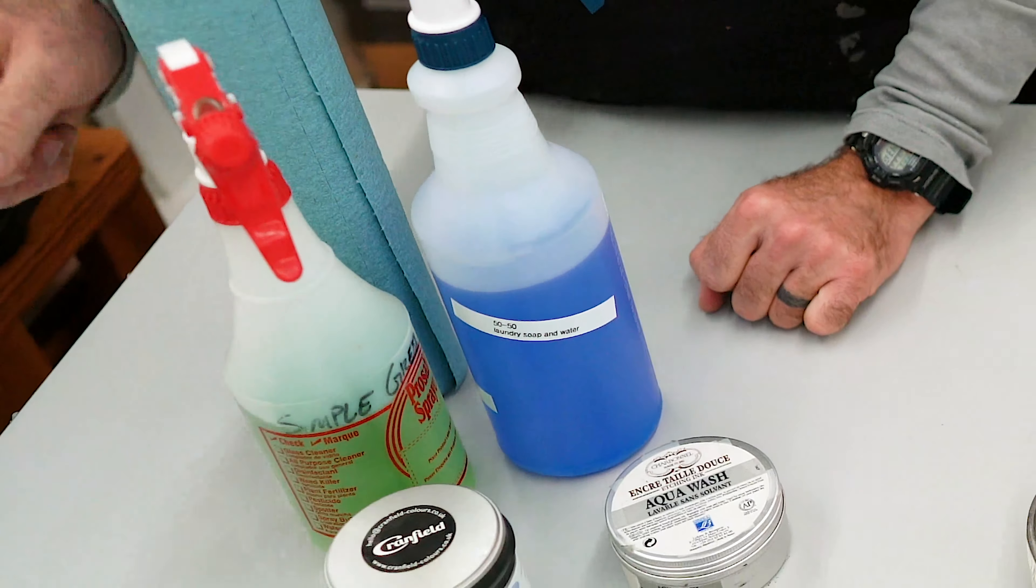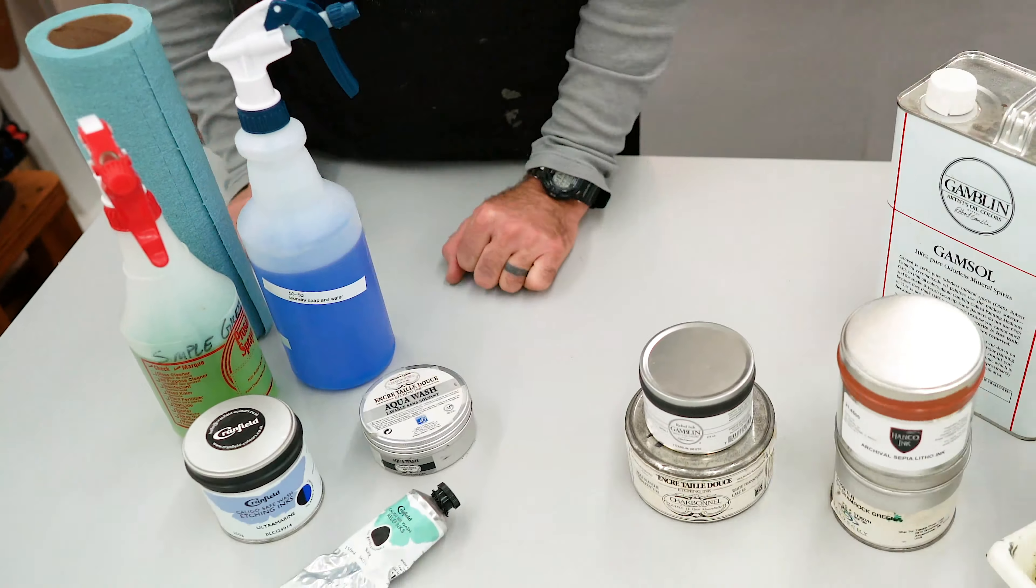Starting with oil-based inks, Hanko is a litho ink formerly known as Hanchi. This top shelf, top-notch ink shines when used for relief prints.